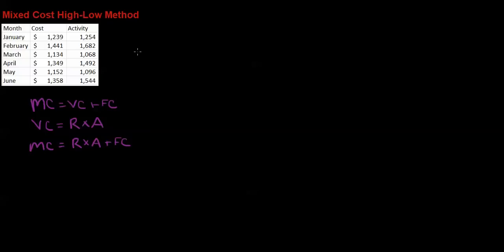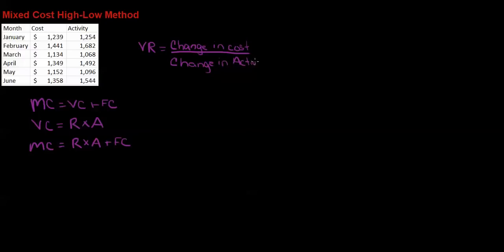The first thing we want to do is calculate our variable rate. The variable rate can be said to be change in cost divided by change in activity. Because this is called the high-low method, we're going to find the high point and the low point from this list.